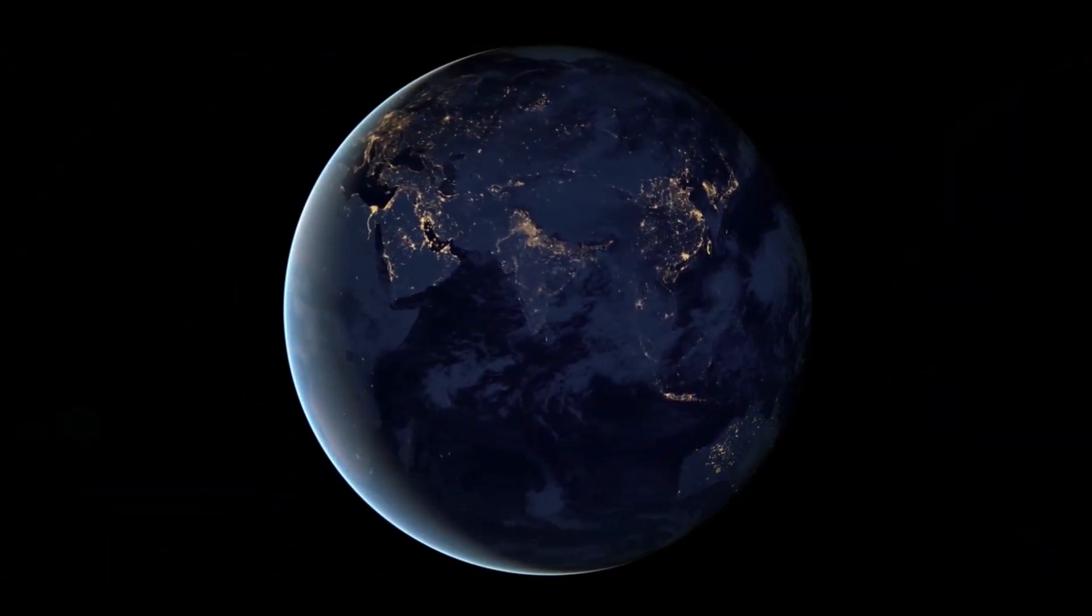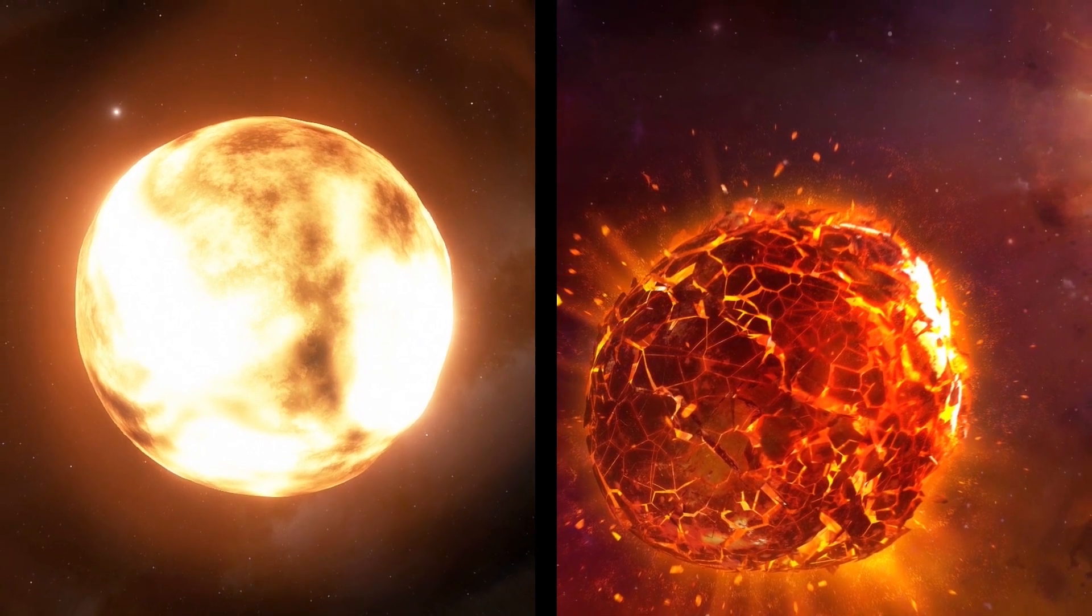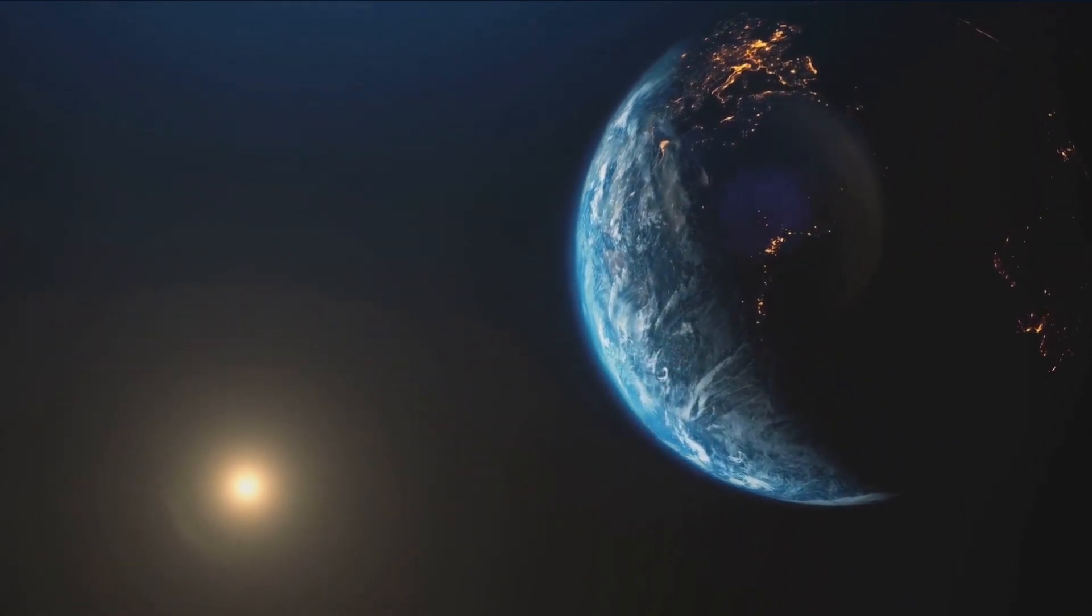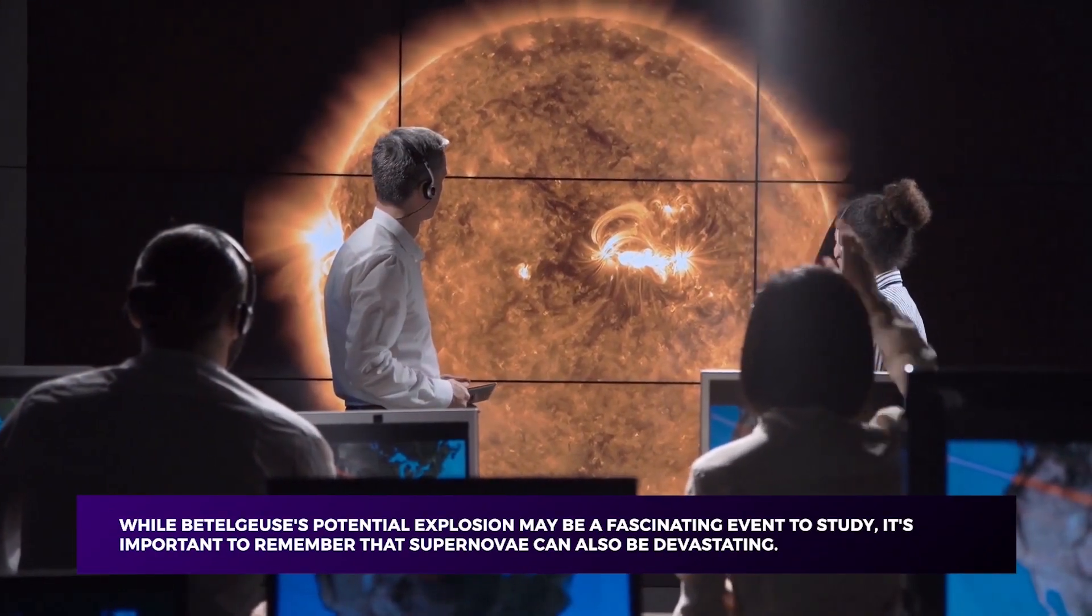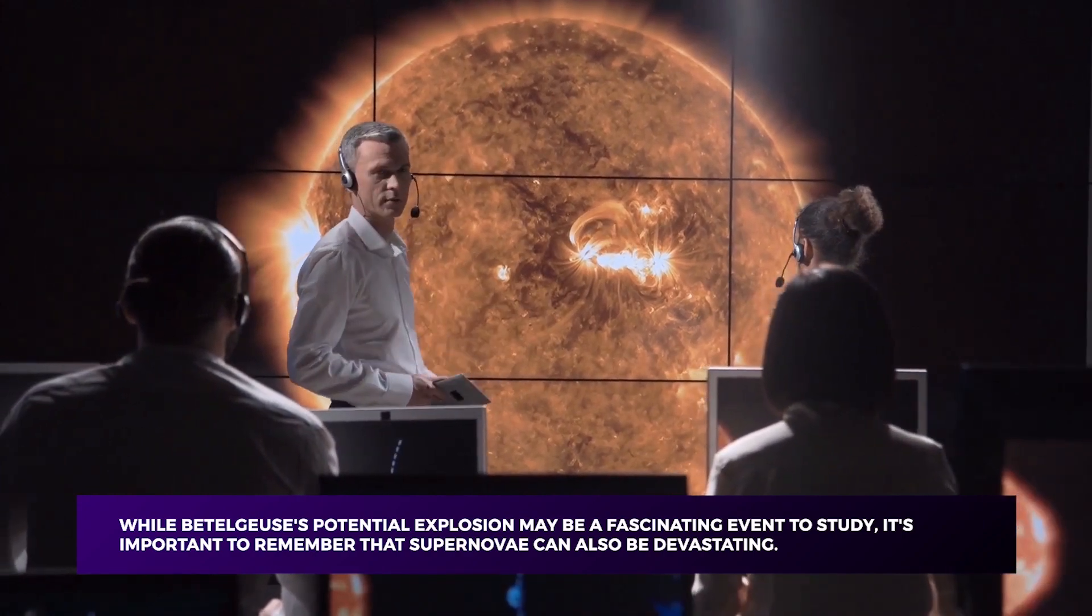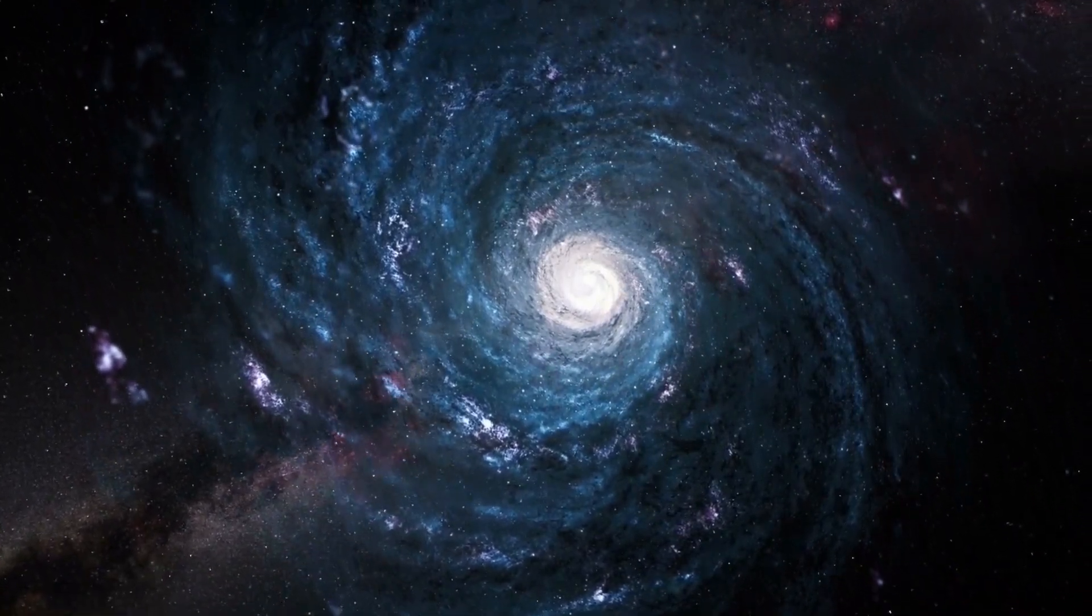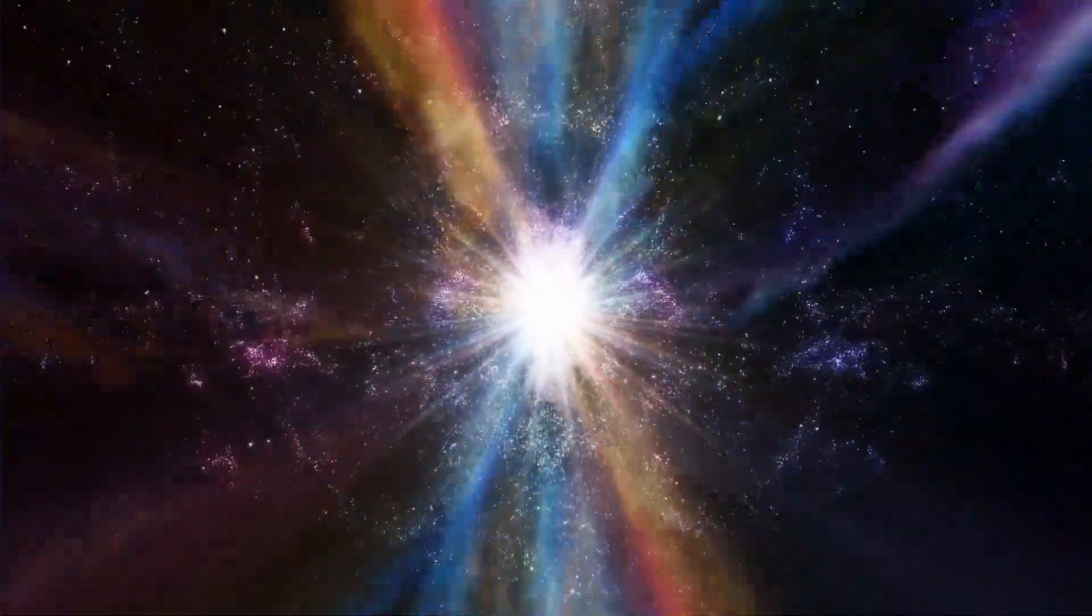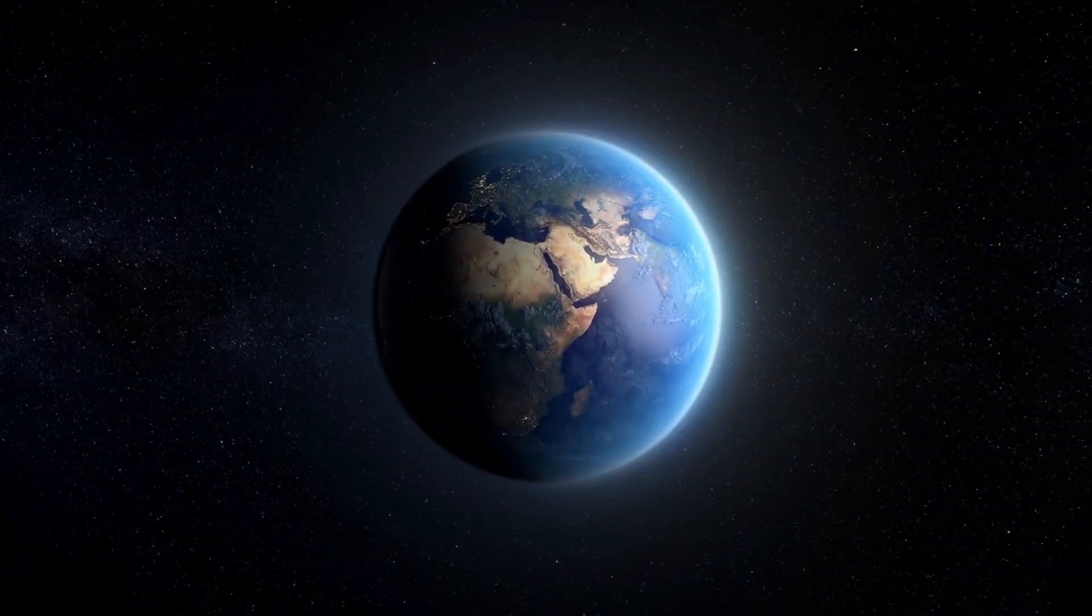Despite the incredible display, there would be some potential consequences for life on Earth. The shockwave would create a burst of high-energy radiation that could damage the Earth's ozone layer, increasing harmful UV radiation. However, this effect would likely be temporary and would not have long-term consequences for life on Earth. While Betelgeuse's potential explosion may be a fascinating event to study, it's important to remember that supernovae can also be devastating. If a supernova were to occur in our galaxy at a closer distance, the effects could be catastrophic. The blast of radiation and cosmic rays would likely strip the Earth's atmosphere of its protective ozone layer, increasing harmful UV radiation that could cause widespread damage to life on Earth.